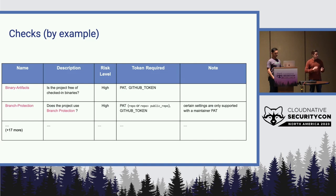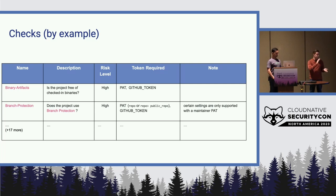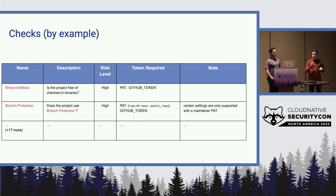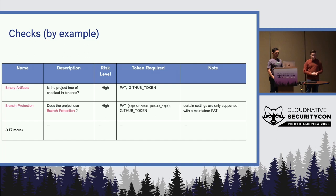If we look at the first one, we have a check for binary artifacts — that is, is this project storing binaries and therefore obfuscated source code in the project, or can we see all of the source code? With each check, if you look at the table on the project page, we go through each and every check that we provide in Scorecards. In there you'll see what it is, a little bit more information about it, a risk level in terms of whether this is a serious risk if a project is not adhering to it, the amount of access required for Scorecard to gather the information, and any other notes that might be beneficial to know.